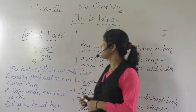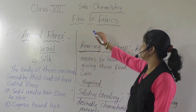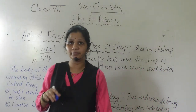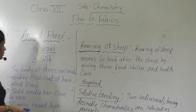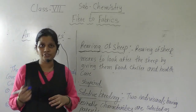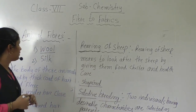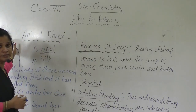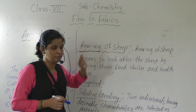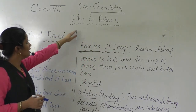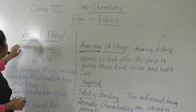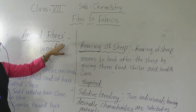Good morning students. Yesterday we started the new lesson Fiber to Fabric, and we discussed about fibers and types of fibers — synthetic fibers and natural fibers. In natural fibers, there are two types: animal fibers and plant fibers. So in this lesson, Fiber to Fabric, we are going to do a detailed study about animal fibers.